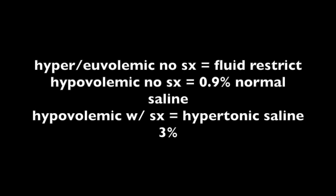For treatment of hyponatremia: if hypervolemic or euvolemic without symptoms, the first step is water restriction. If hypovolemic without symptoms, give normal saline. If hypovolemic with symptoms, or if sodium levels are below 120 — severe hyponatremia — give hypertonic saline, which is 3%. Symptoms of severe hyponatremia include lethargy, coma, or altered mental status.